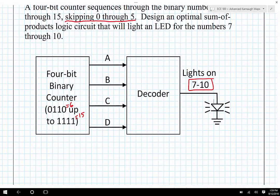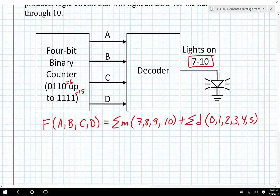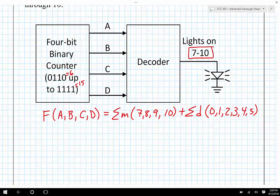We can go ahead and write the min-term expression. So I know that F, and there are 4 variables A, B, C, D, is equal to the min-terms, and I need to include 7, 8, 9, and 10, plus the don't-cares of 0, 1, 2, 3, 4, and 5. That's all the work it takes to write out what the min-term expression is going to look like.